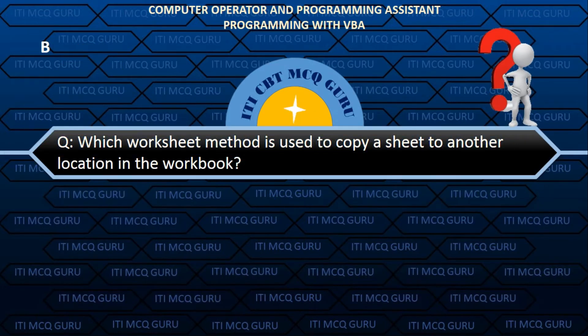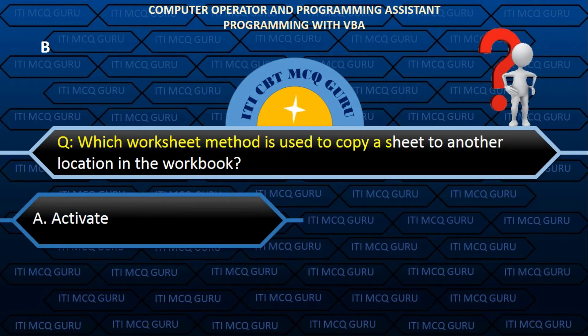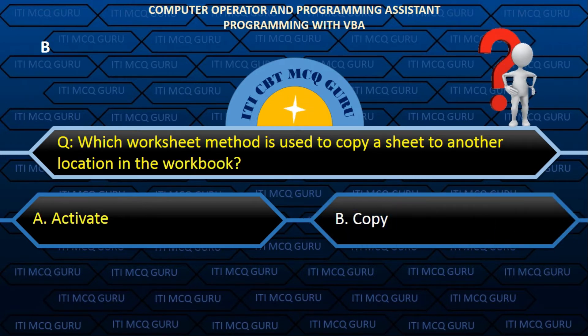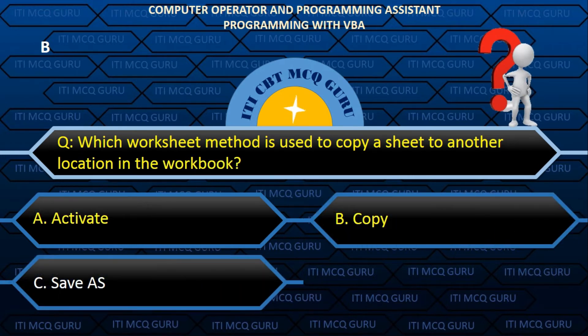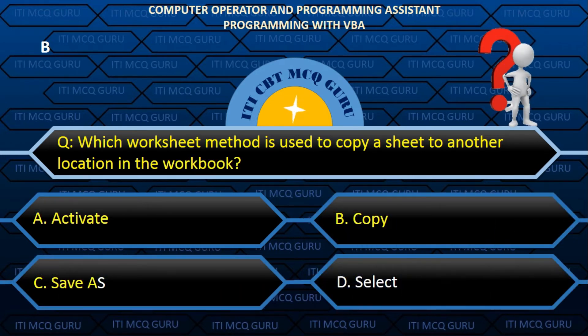Which worksheet method is used to copy a sheet to another location in the workbook? Answer: D. Copy.